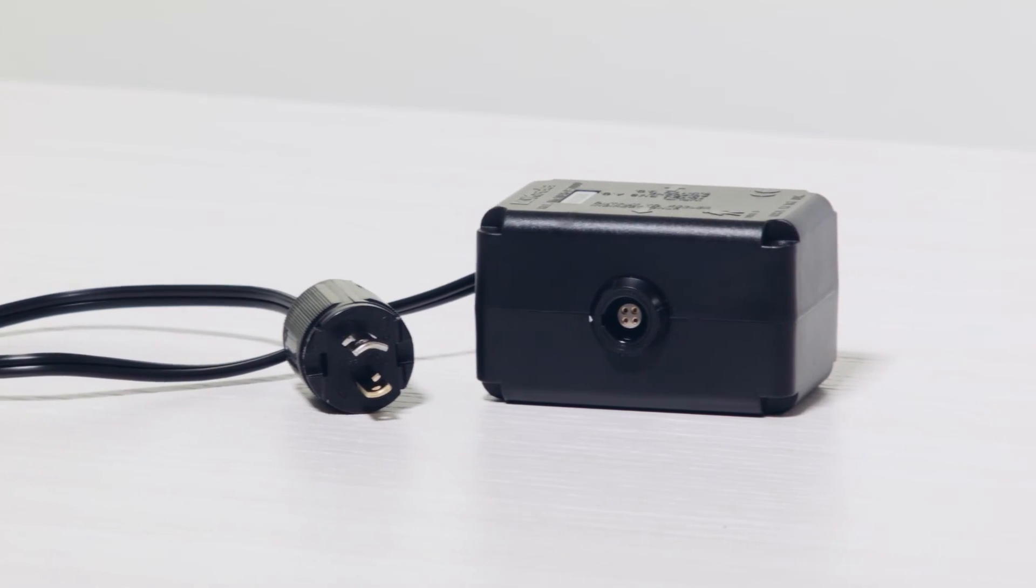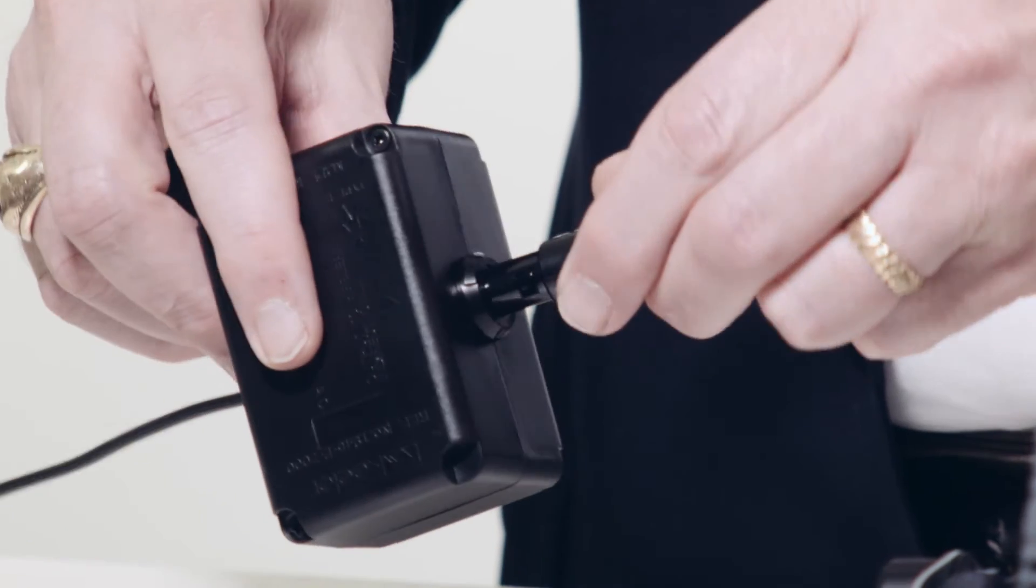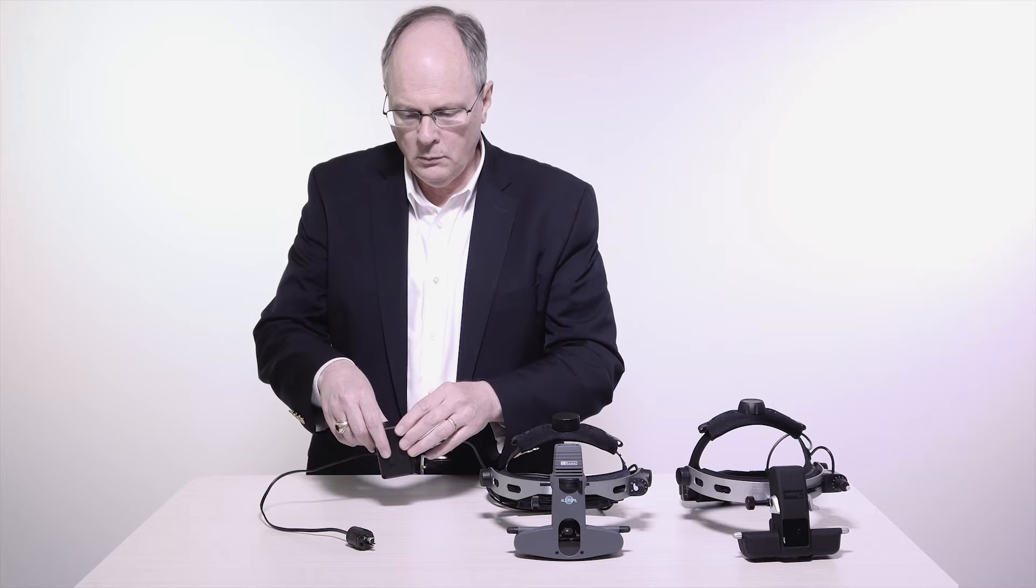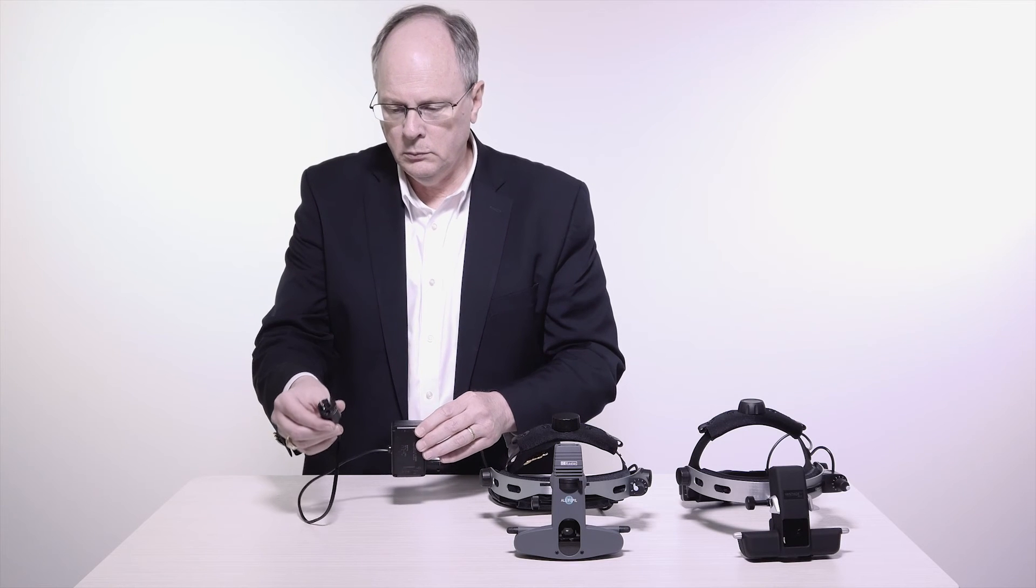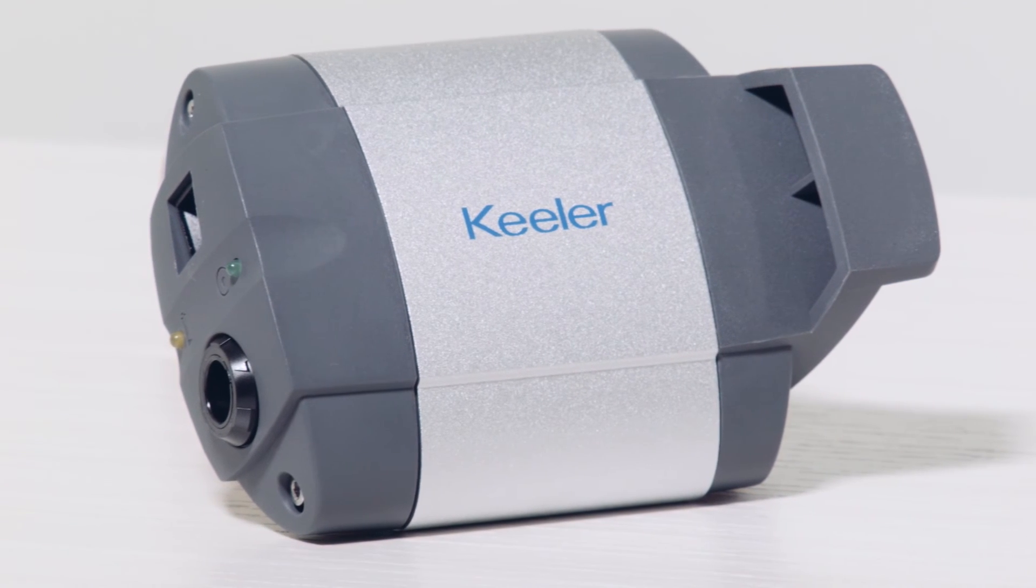All Pupil 2 or Vantage Plus wired units can be powered using your refraction stand. Depending on the configuration, you can attach a banana or Hubble plug to your stand.